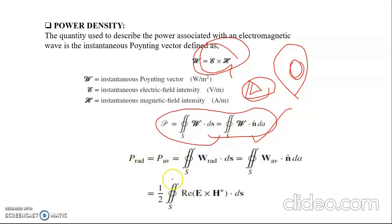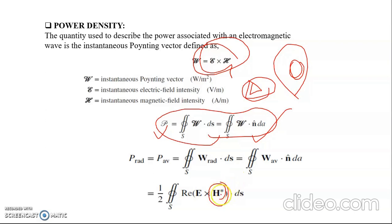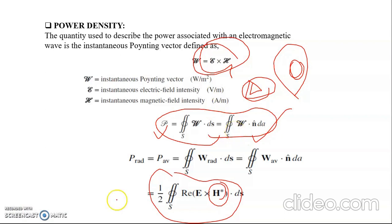To find the power of an EM wave from the Poynting vector, we integrate over the surface with a small area element ds. The power radiated is P = ∮ W·ds = (1/2) Re[E × H*]·ds, where H* is the complex conjugate of H. So the power radiated by an EM wave equals (1/2) times the closed surface integral of the real part of E × H* dot ds.